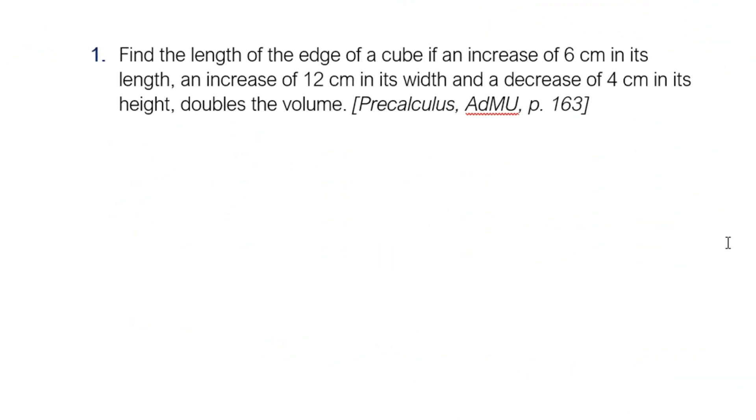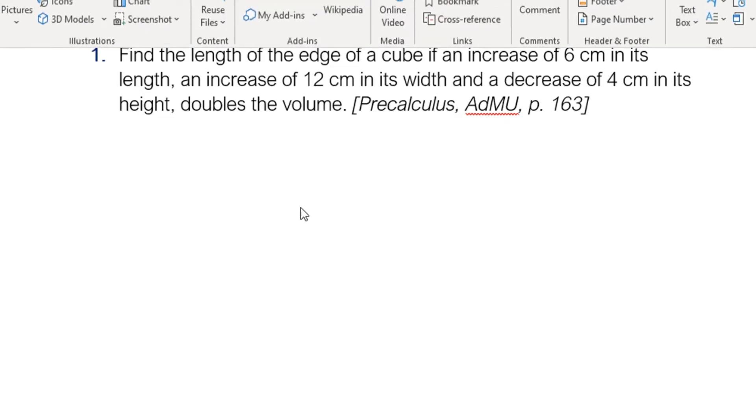Let's have the first problem. Find the length of the edge of a cube if an increase of 6 centimeters in its length, an increase of 12 centimeters in its width, and a decrease of 4 centimeters in its height doubles the volume. The next step is to identify math concepts involved in our problem. Number one, there's a cube and then we change the dimensions of the cube. So you have an original cube with a volume, and then there's some modifications: increase of 6 centimeters in length, increase of 12 centimeters in width, and a decrease of 4 centimeters in the height. And then what happens is the volume now doubles. The next thing we need to do is let's have some illustrations.